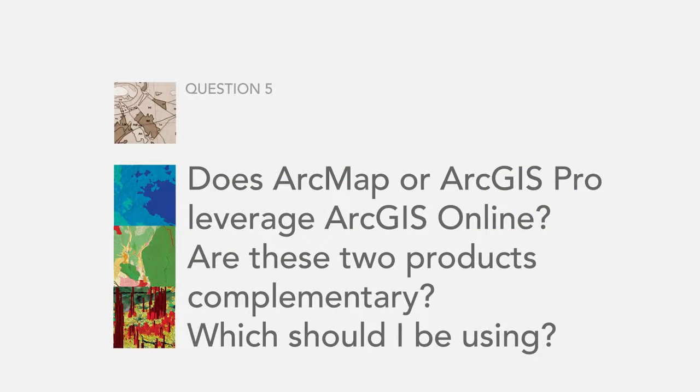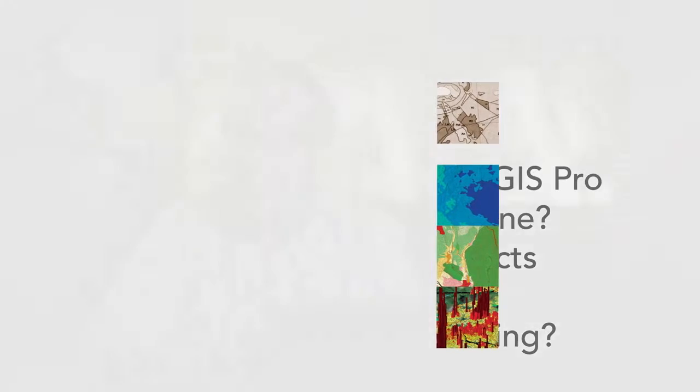The next question is: does ArcMap or ArcGIS Pro leverage ArcGIS Online? Are these two products complementary, and which should I be using? ArcGIS Desktop is a core part of the ArcGIS platform and foundation of WebGIS. ArcMap and ArcGIS Pro are certainly complementary and both support WebGIS, but ArcGIS Pro is the more capable — it's been designed from the ground up as a WebGIS application and offers capabilities above and beyond ArcMap. Both can be used together, and there are many good reasons to begin using Pro.